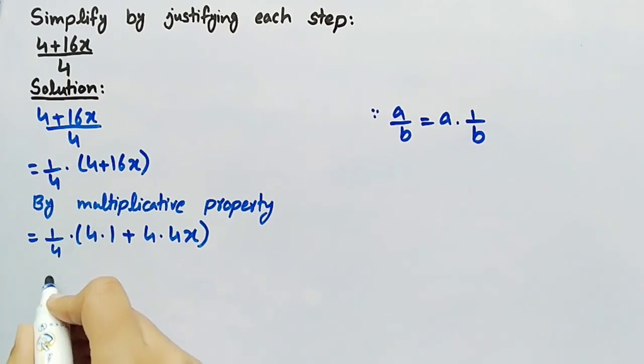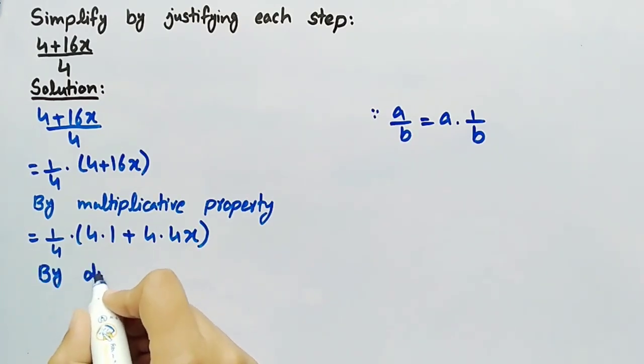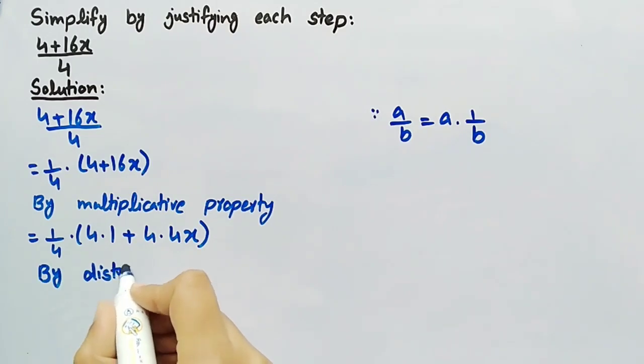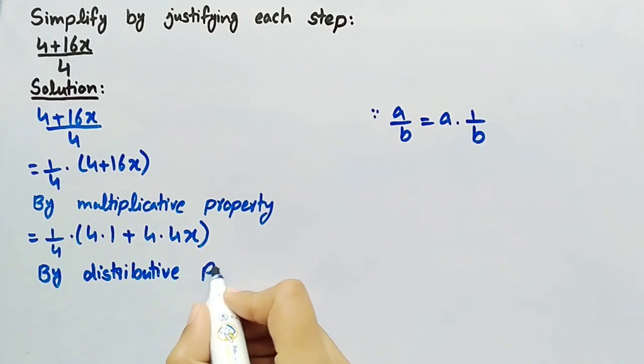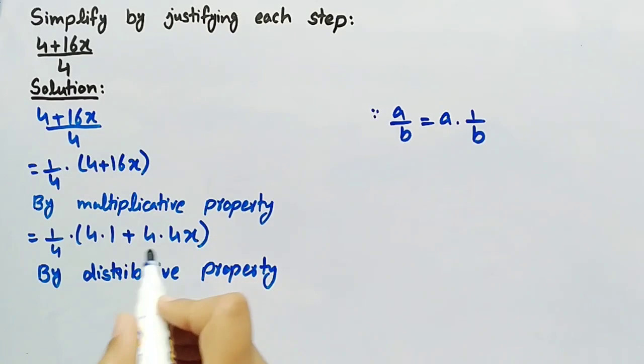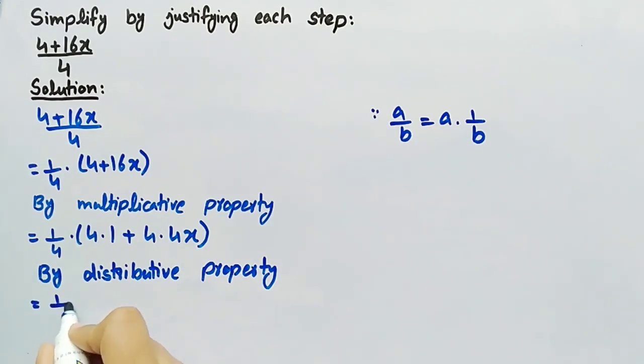Now by using distributive property, we can rewrite it as 1 by 4 into 4 into 1 plus 4x.